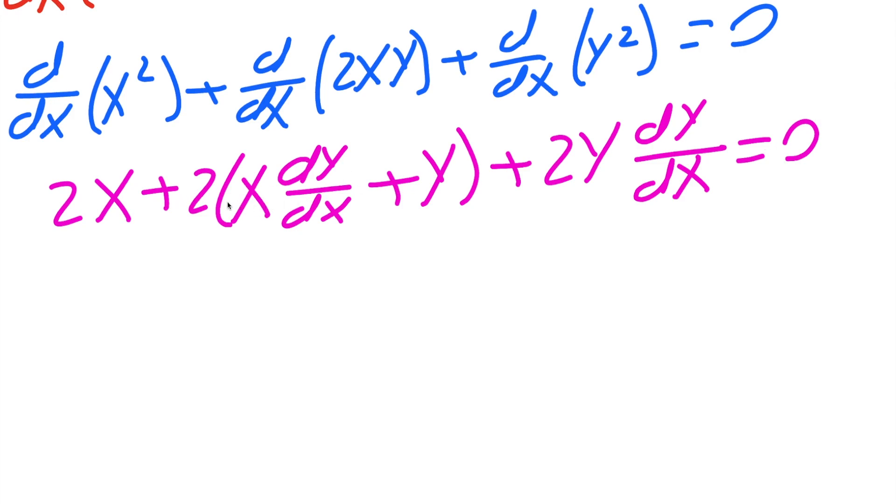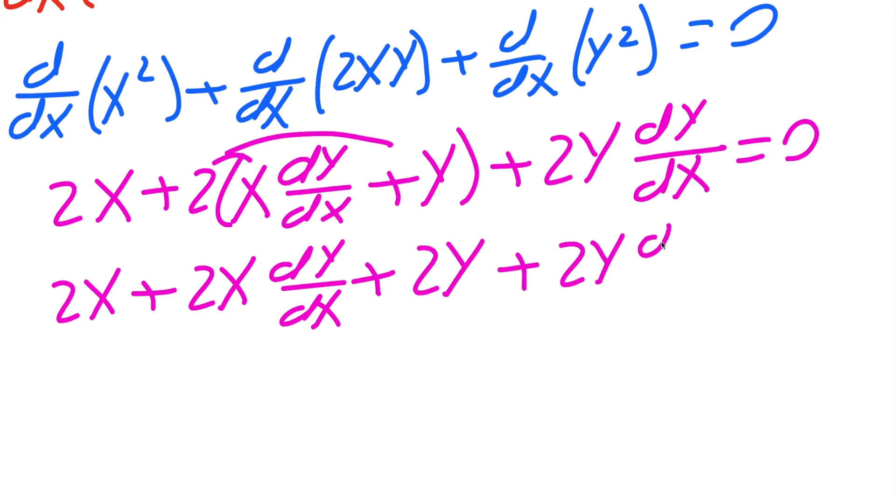Now next, we can expand this by distributing the 2 to both pieces. So we're going to get 2x + 2x dy/dx + 2y dy/dx = 0.